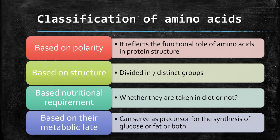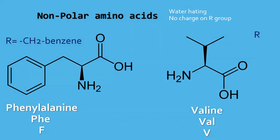Let us see first classification based on polarity. Amino acids are classified into four groups based on polarity, which in turn reflects the functional role of amino acids in protein structure. The first class is non-polar amino acids. These amino acids are also referred to as water-hating or hydrophobic. They have no charge on the R group side chain. The amino acids included in this group are phenylalanine, valine, alanine, leucine, isoleucine, methionine, tryptophan and proline.